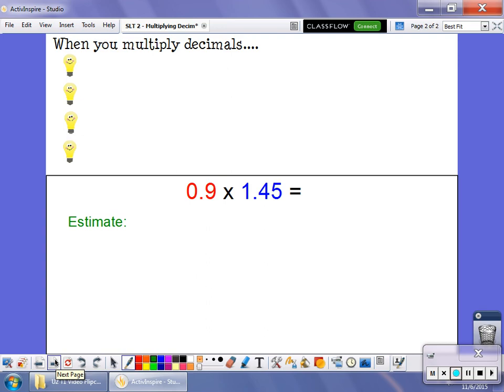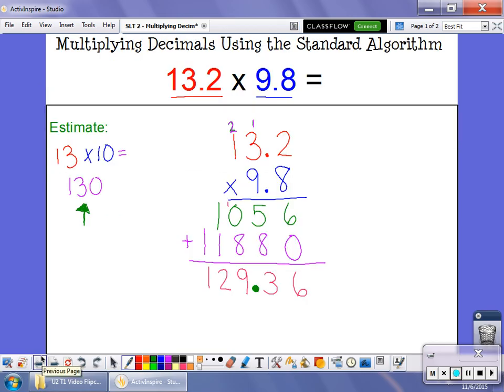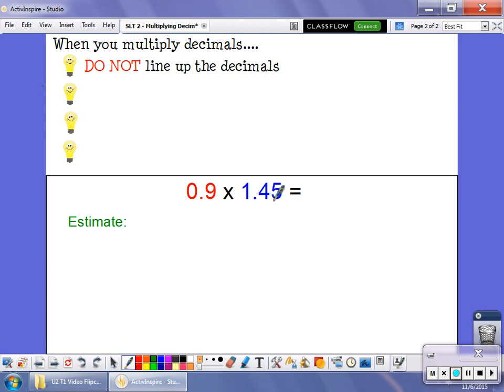There are four things I want you to keep in mind when you multiply decimals. Number one, you do not line up your decimals. If you look back here, this problem each had one decimal point value. But if we're doing this problem, one of them has one place and one has two places. We're not going to line them up. You only have to line them up in addition and subtraction.